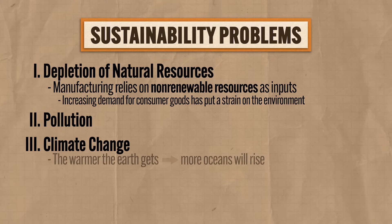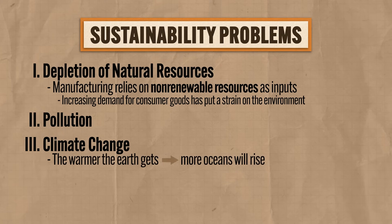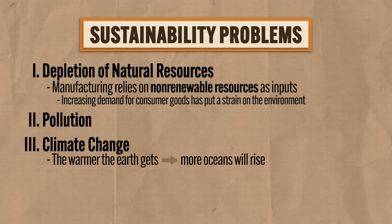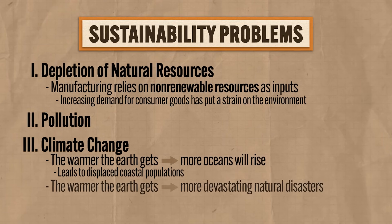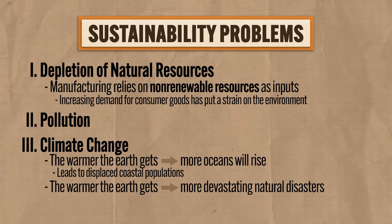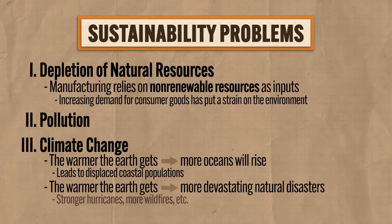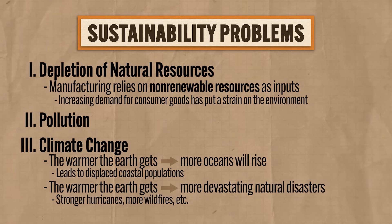Since the industrial revolution began, the amount of carbon dioxide released into the air has spiked, and that has increased the global temperature at a steady rate. The warmer the Earth gets, the more the oceans will rise, and that will lead to displacing coastal populations. And the warmer the Earth gets, the more devastating natural disasters will occur, like stronger hurricanes and more wildfires. So our globalized economy has created some problems, but there are in fact some solutions.